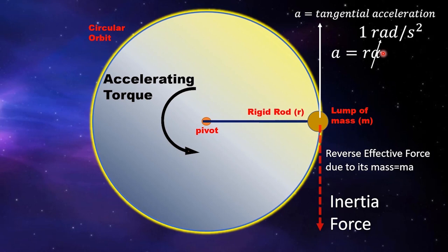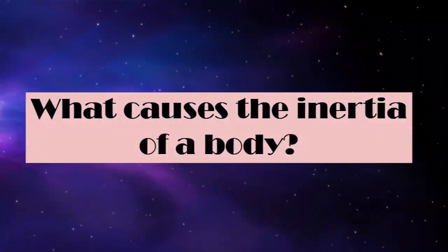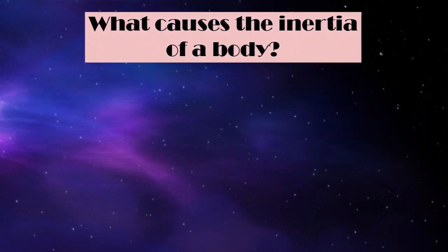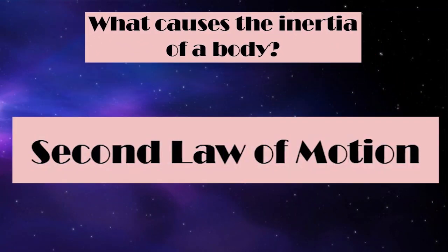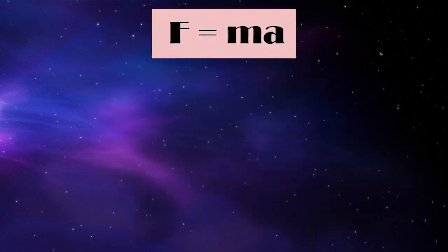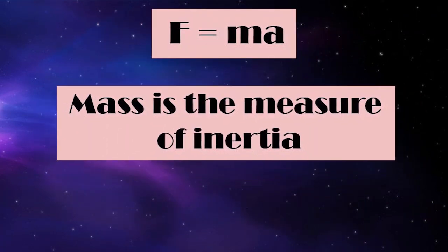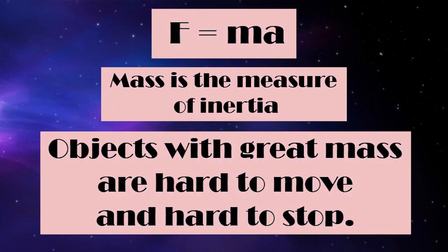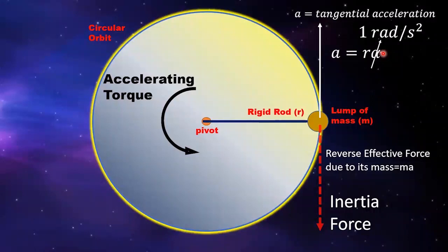Anybody with inertia produces force if you try to change its state of motion. But what causes the inertia of a body? From Newton's second law — the law of acceleration, force equals mass times acceleration — the answer is mass. That's why in physics, mass is the measure of inertia. Massive objects with great mass are hard to move and also hard to stop.